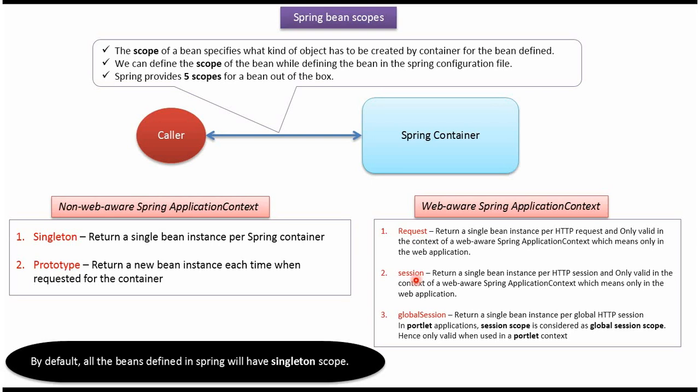Session scope returns a single bean instance per HTTP session. Session scope is only valid in the context of a web-aware Spring application context, which means session scope is only valid in a web application.